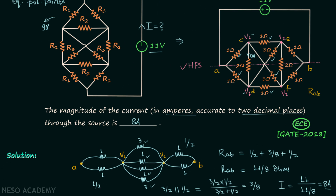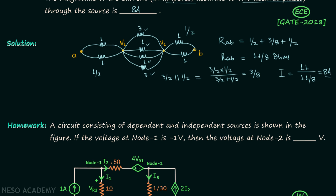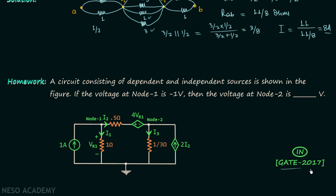Now we will move on to the homework problem, which is taken from the GATE 2017 Instrumentation paper. Read the problem and once you have your answer, post it in the comment section.